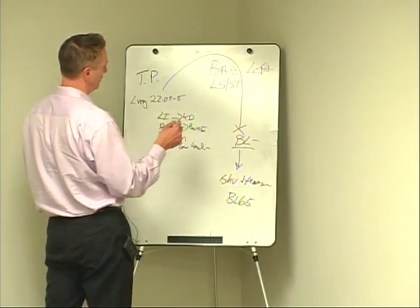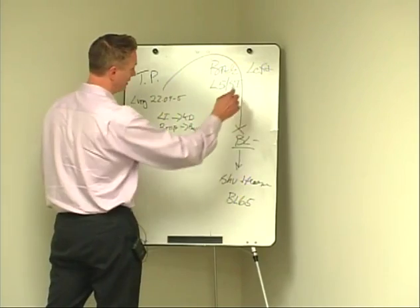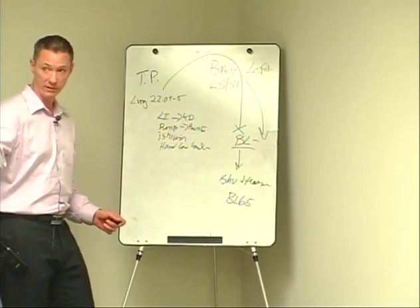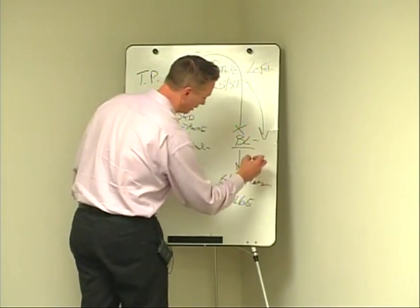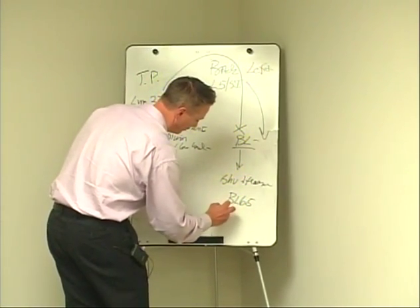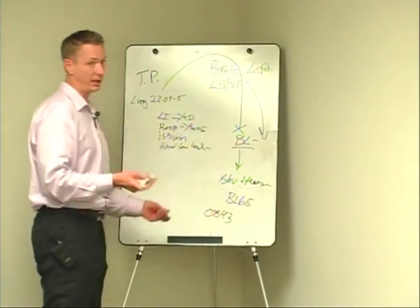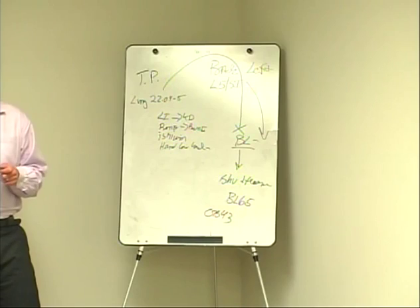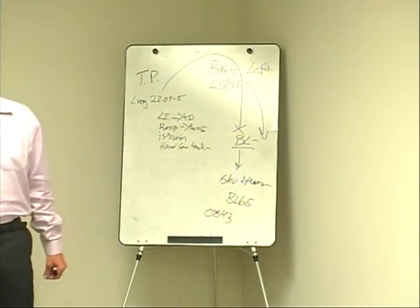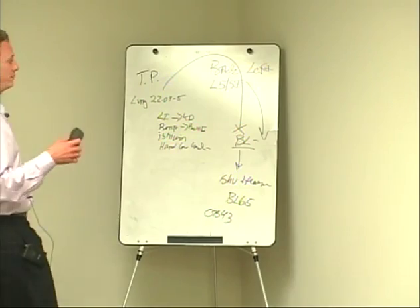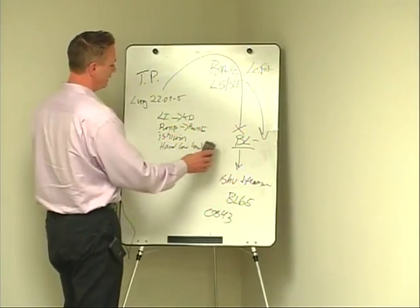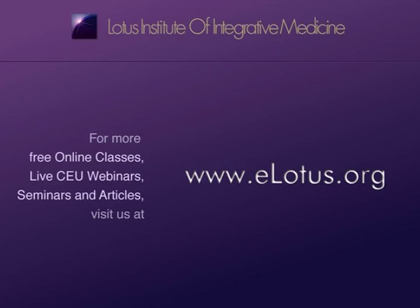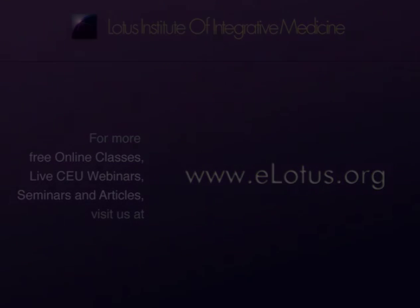You could also say the pain is on both the bladder and the gallbladder channel. Then we would need the Shu-stream point of the gallbladder as well, which would be GB43. So you might have two guide points, though usually you don't. But that's kind of how it works — typically you're looking for the Shu-stream point or the Ying-spring of the affected channel.